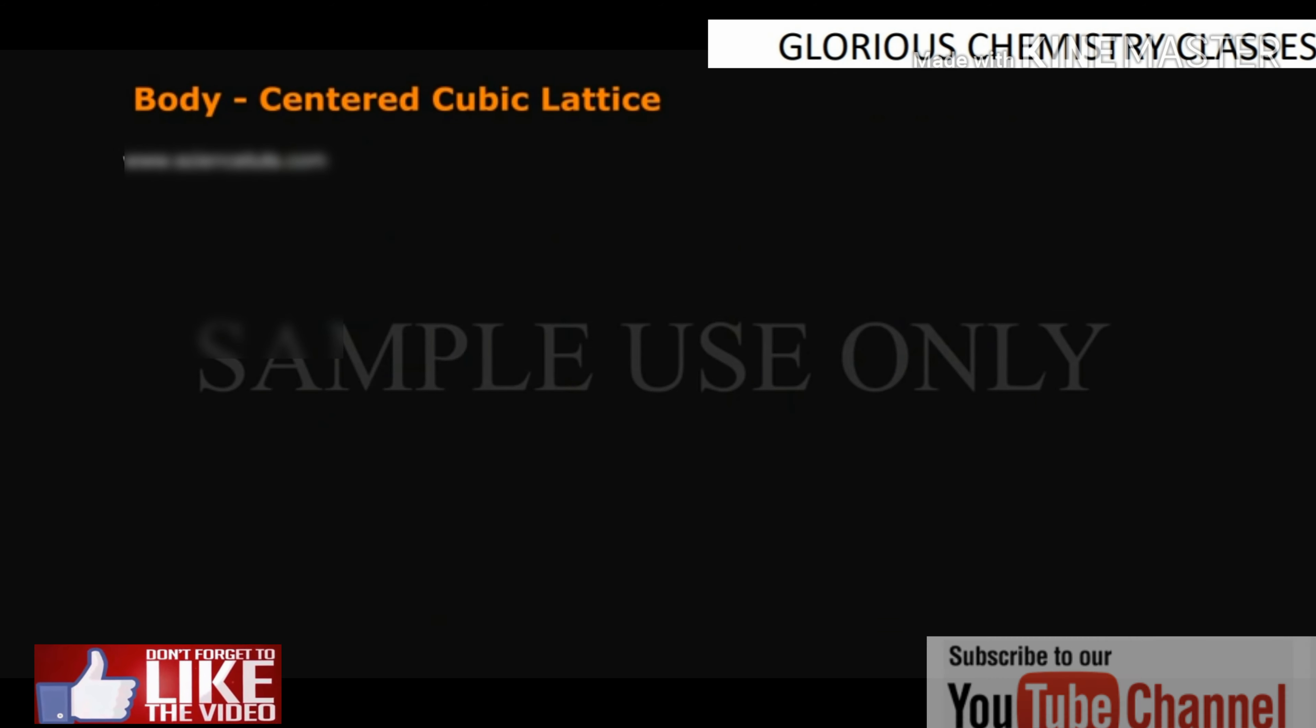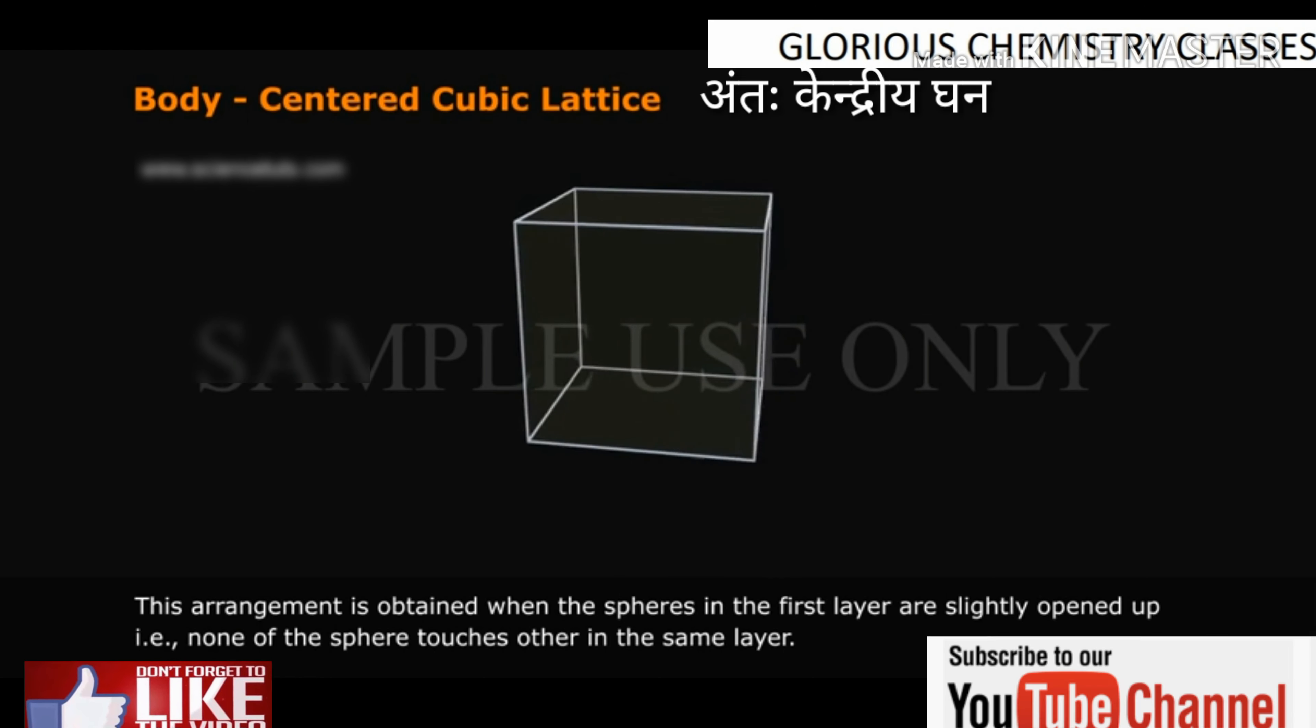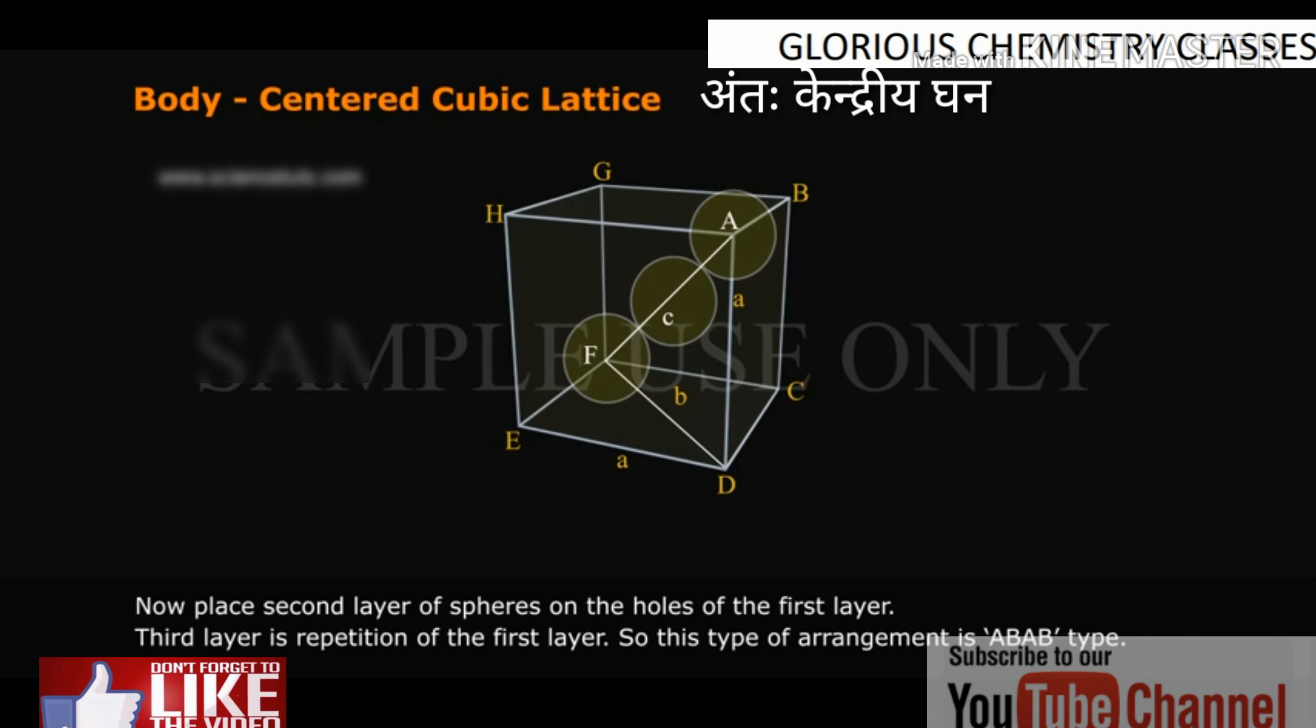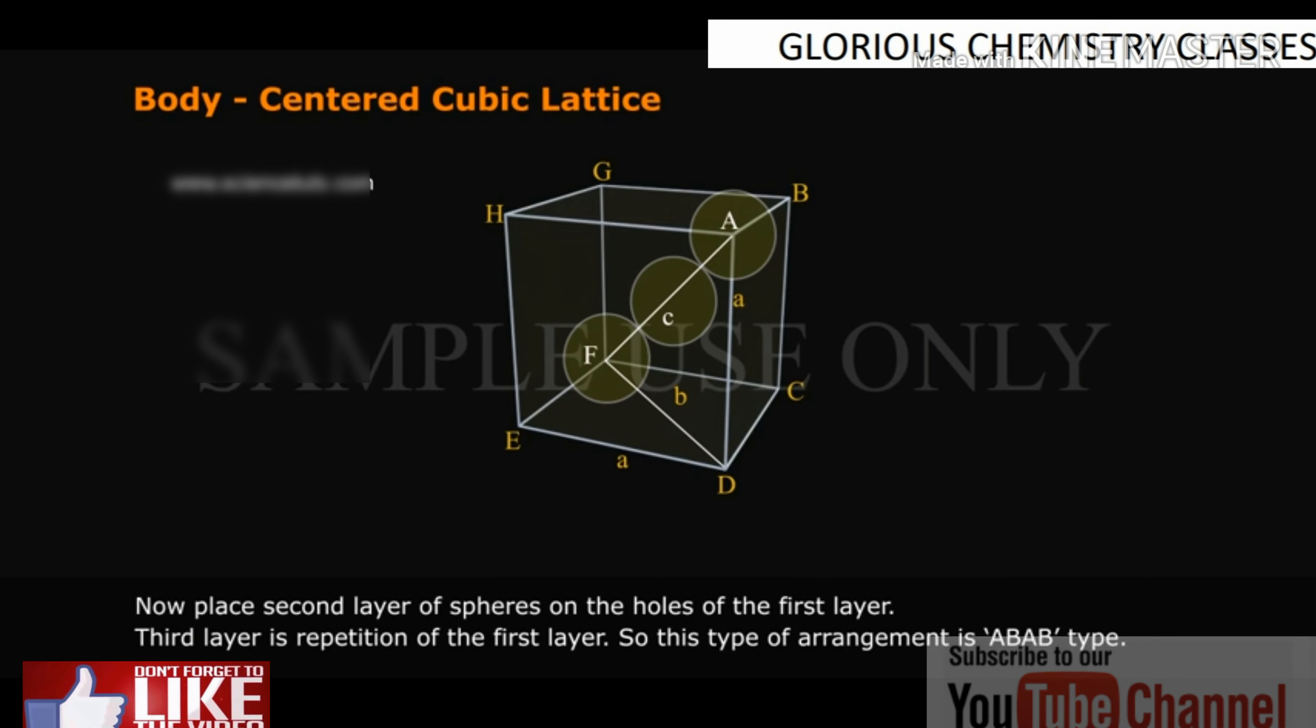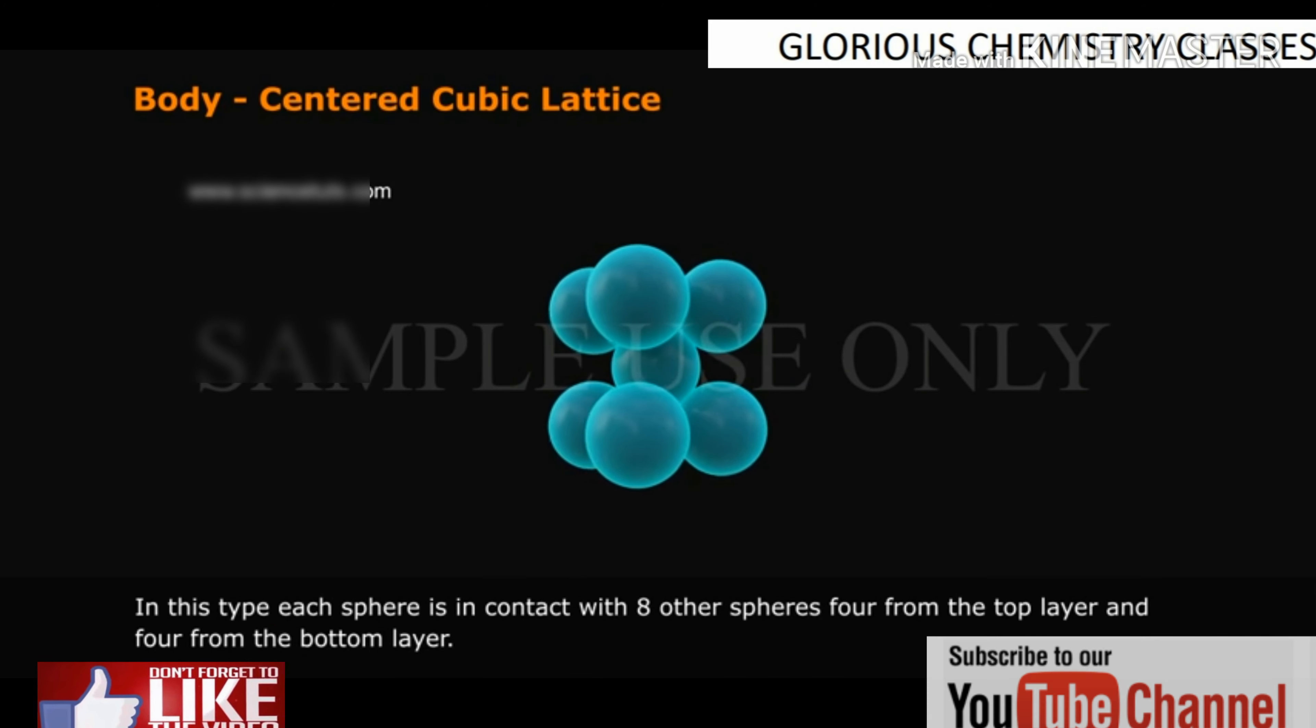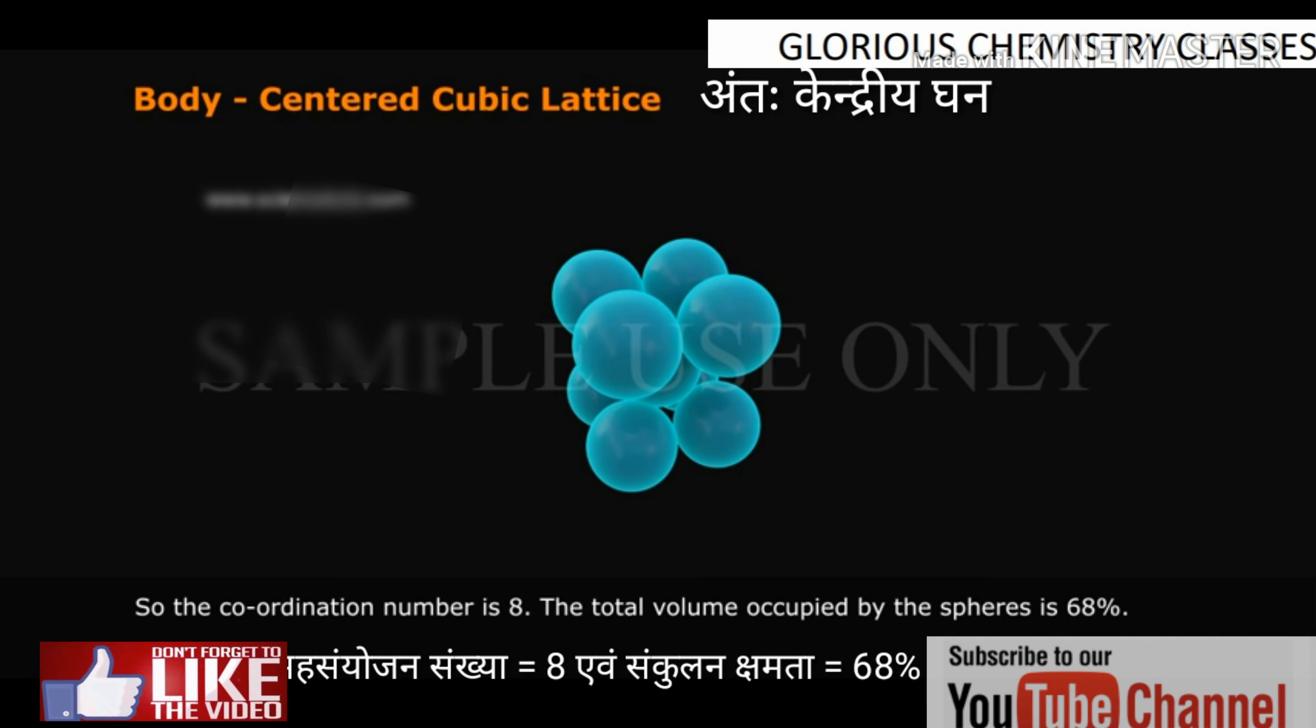Body-centered cubic lattice: This arrangement is obtained when the spheres in the first layer are slightly opened up, that is, none of the sphere touches other in the same layer. Now place second layer of spheres on the holes of the first layer. Third layer is repetition of the first layer, so this type of arrangement is AB-AB type. In this type, each sphere is in contact with 8 other spheres, 4 from the top layer and 4 from the bottom layer. So the coordination number is 8.